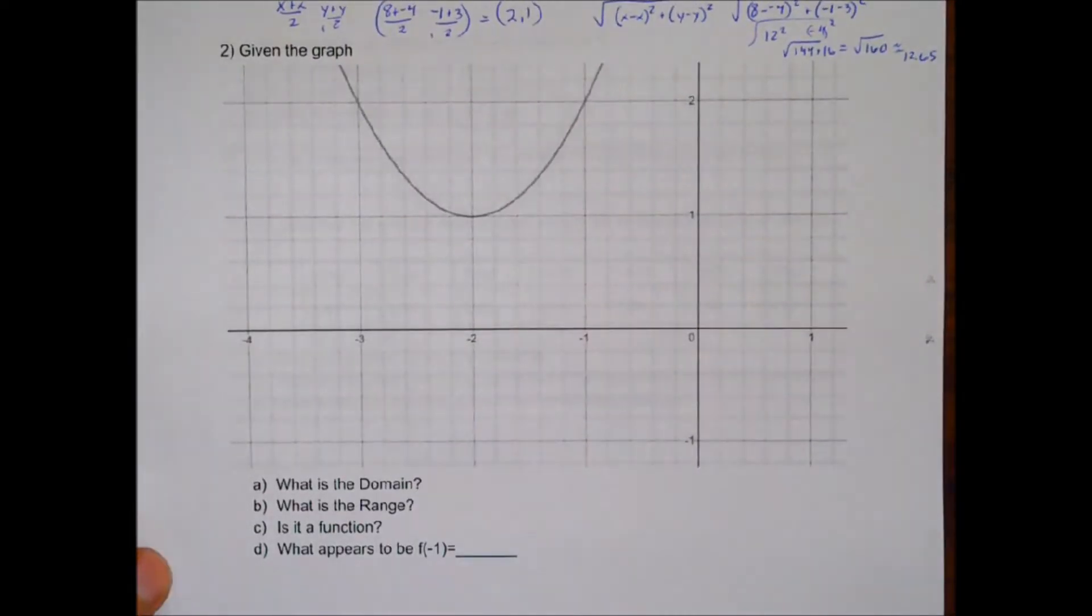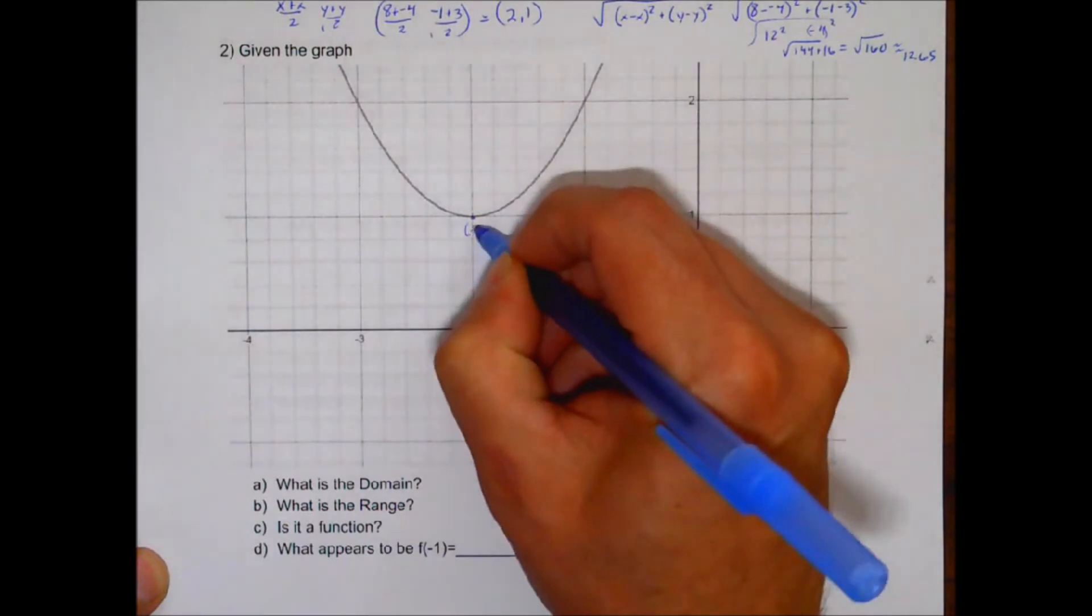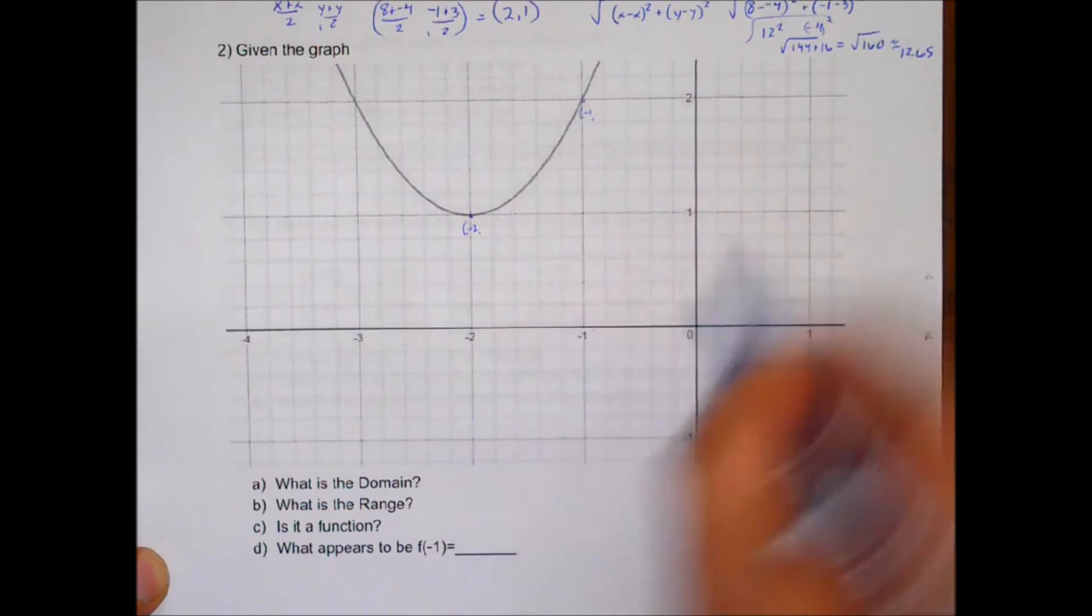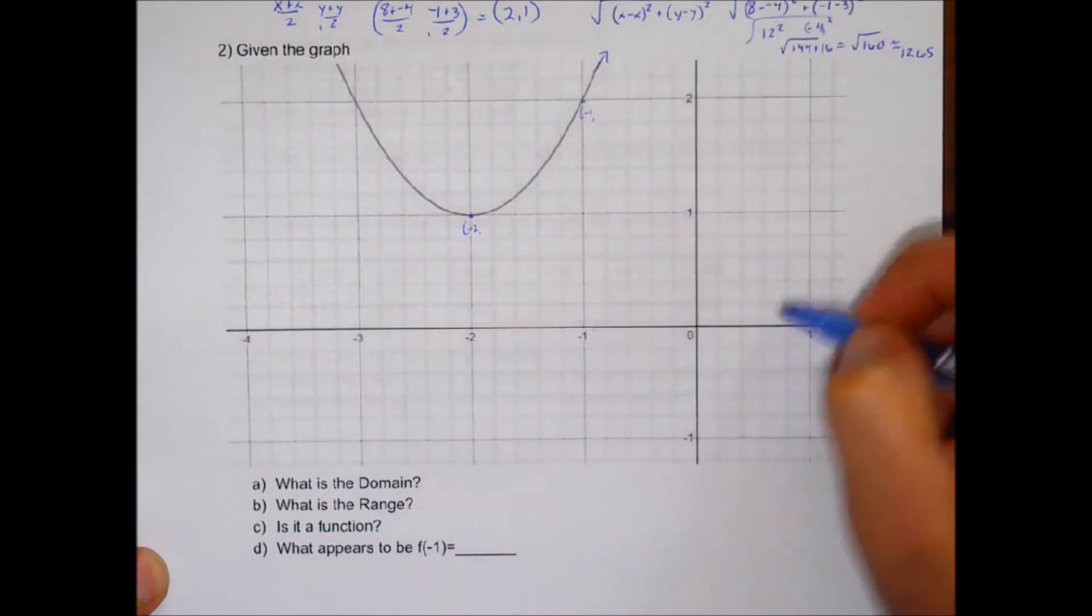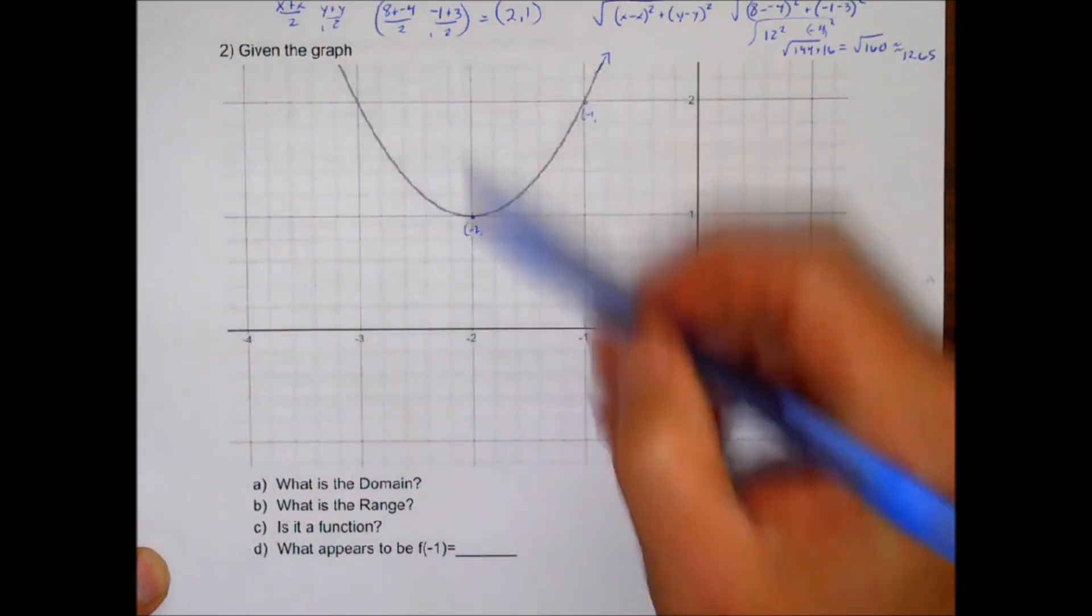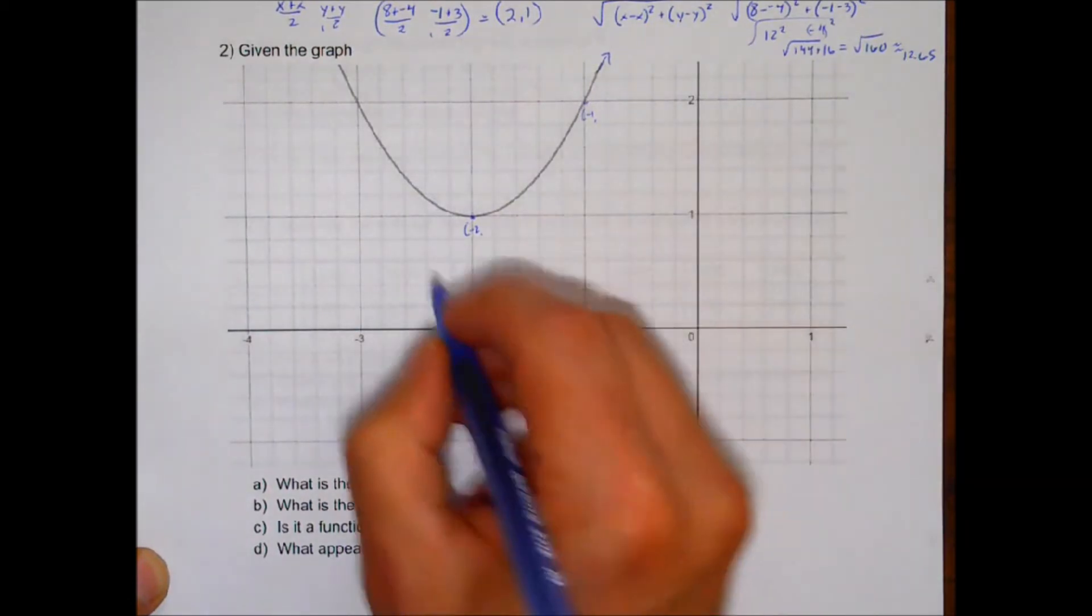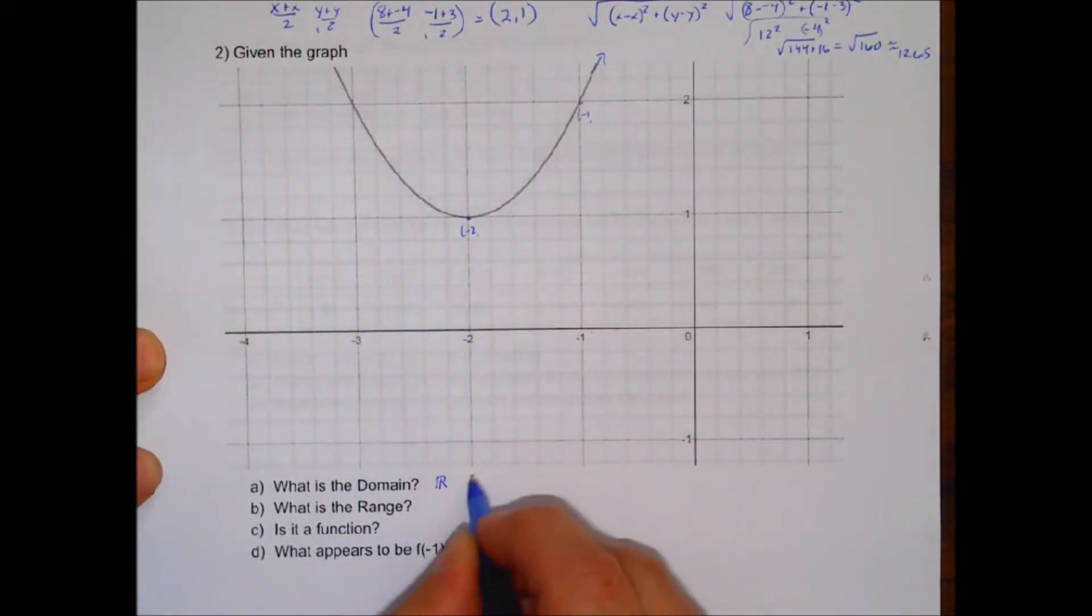Looking at this number 2, we're looking at the domain. Domain are your x numbers. So here, this point here has an x of negative 2. Right here has an x of negative 1. And you notice that the graph will keep going to 0 and to 1 and to negative 3 and negative 4, and any number in between those integers as well. So our domain is going to be all real numbers, or another way to write that is it goes from negative infinity to positive infinity.